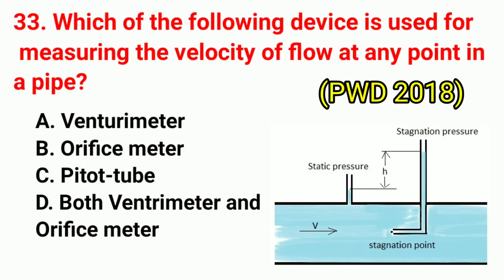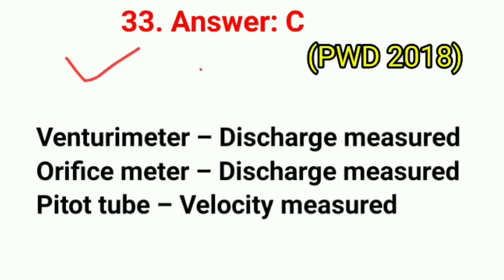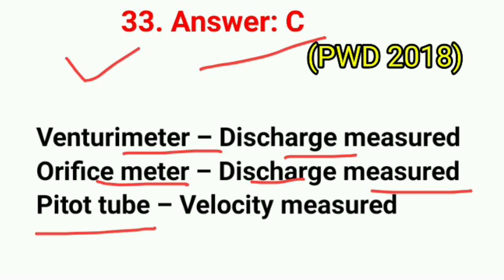Question No. 33. Which of the following devices is used for measuring the velocity of flow at any point in a pipe? Correct answer is option C: Pitot tube. Venturimeter measures discharge; orifice meter measures discharge; Pitot tube measures velocity.